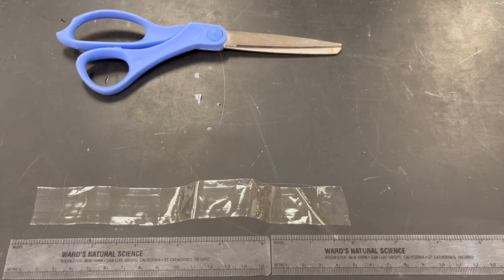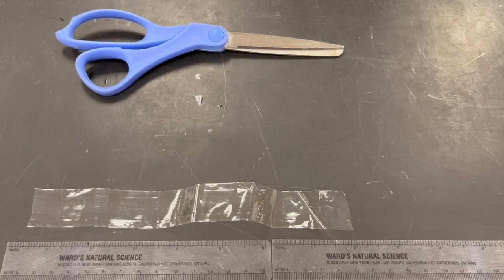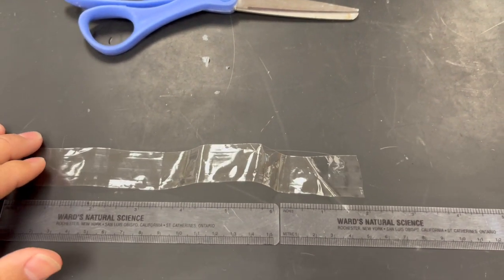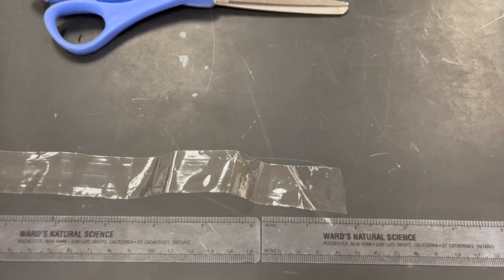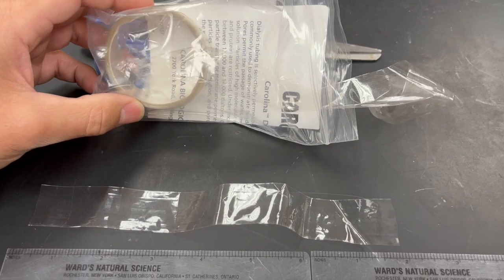Okay guys, so this is the experiment for the dialysis tubing, and what we're investigating here is osmosis. One of the first things you're going to do is cut the dialysis tubing bags. It comes like this, so you just want to cut it into about 8 inch strips.